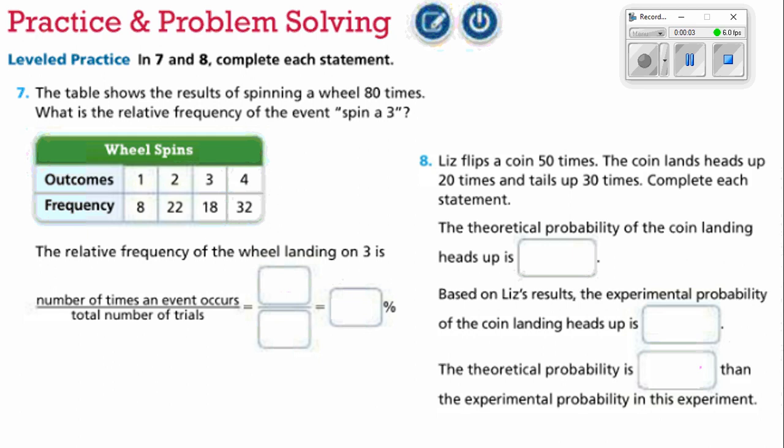Today it's time to go over the practice and problem solving for lesson 7-3. We've got number 7 starting us off. It says the table shows the result of spinning a wheel 80 times. What is the relative frequency of the event of spinning a 3?